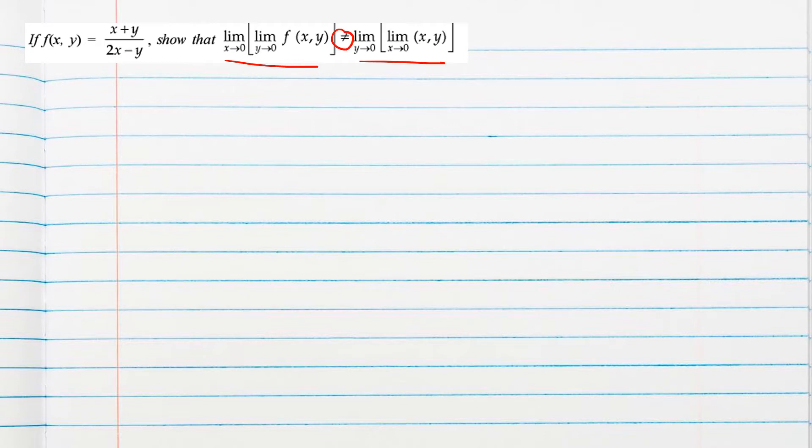For the LHS, consider the function where we will substitute values. We are taking the limit as y tends to 0, so x will be treated as constant. Only in place of y we will substitute the value.